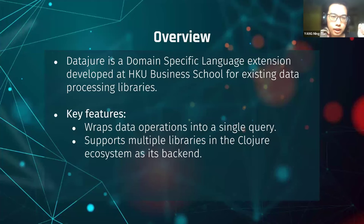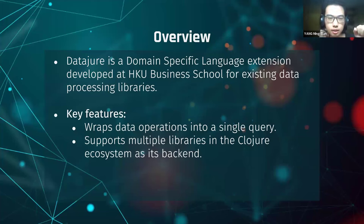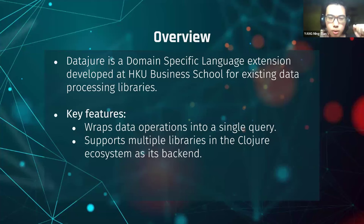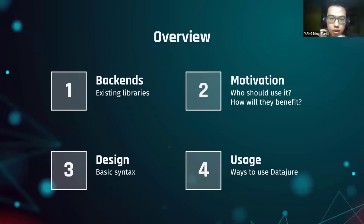Here is the overview. DataJure is a domain-specific language extension developed at HKU Business School for existing data processing libraries. A key feature is that it wraps data operations into a single query and supports multiple libraries in the Clojure ecosystem as its backend. Today's presentation consists of four parts: the backends, our motivation for creating the project, the design and basic syntax, and its usage — plus a live demo.